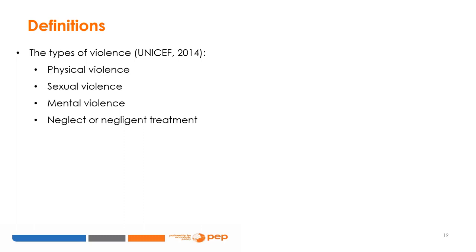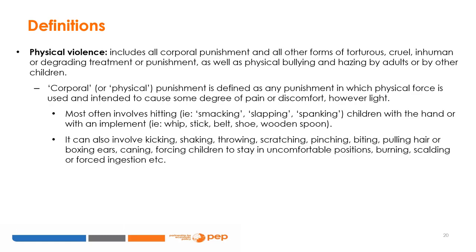We will define four types of violence: physical, sexual, mental, and neglect or negligent treatment. Physical violence includes all corporal punishment and all other forms of torturous, cruel, inhumane, or degrading treatment or punishment, as well as physical bullying and hazing by adults or other children. Corporal or physical punishment can be defined as any punishment in which physical force is used and intended to cause some degree of pain or discomfort. In most cases, it involves hitting children with the hand — smacking, slapping, or spanking — or with an implement like a whip, stick, or belt.